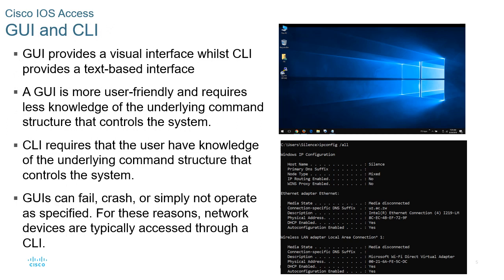The GUI and CLI are two types of interfaces used to interact with a computer system. The GUI provides a visual interface with windows, menus, and icons. The CLI provides a text-based interface requiring the user to type commands into a terminal. From the diagrams, the upper one shows the start menu with icons and a desktop — that is the GUI. The lower one shows a text-based command, ipconfig all, typed into the terminal, which gives output like media state, connection-specific DNS suffix.